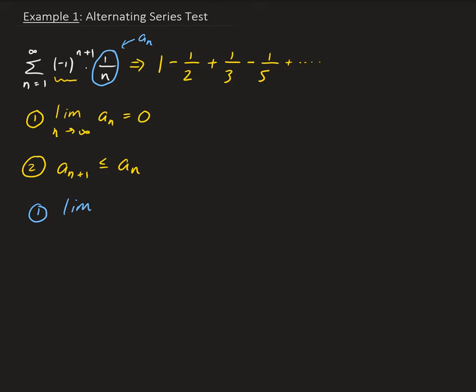So we're going to take the limit as n goes to infinity of 1 over n. So as n gets larger and larger, then you get 1 over something getting larger and larger, this is going to go to 0. So therefore, the first condition is met.